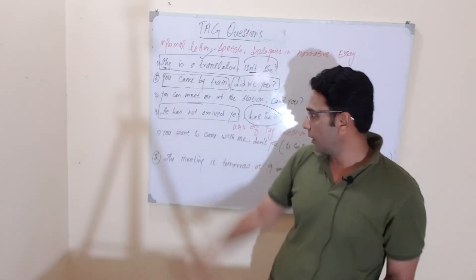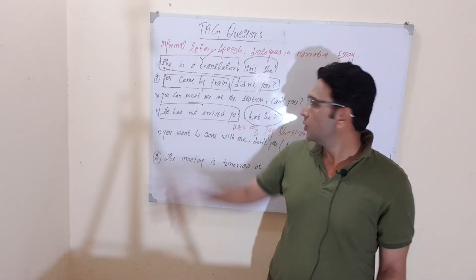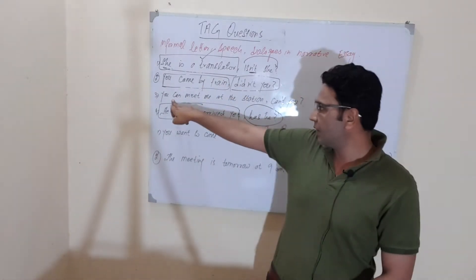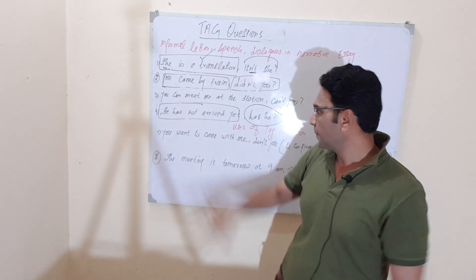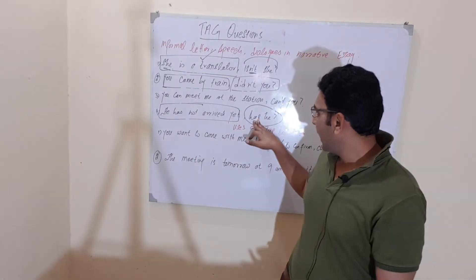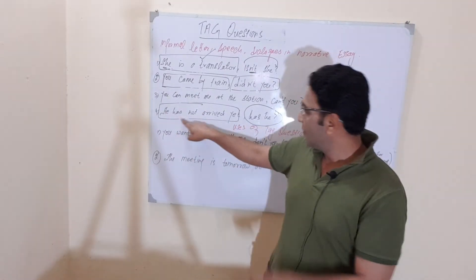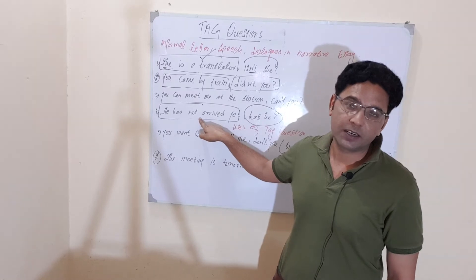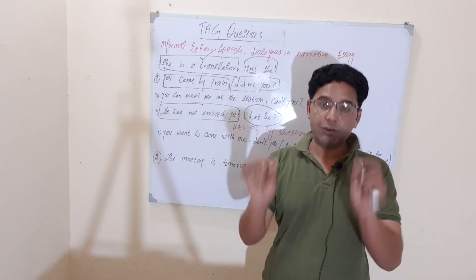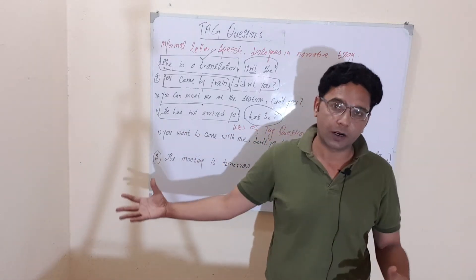Next: 'You can meet me at the station, can't you?' Here the first part is positive, so the tag must be negative interrogative, using the same helping verb from the first part. Then: 'He hasn't arrived yet, has he?' This is a negative sentence, so the tag question should be simply interrogative — not negative interrogative, because the negative is already in the first part.